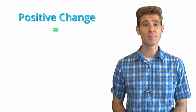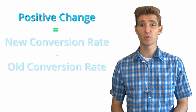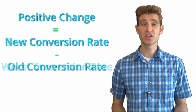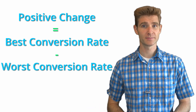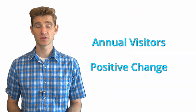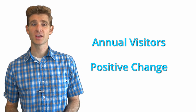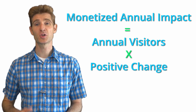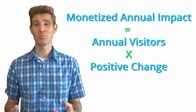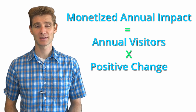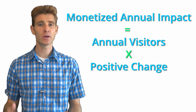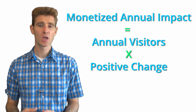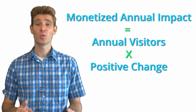The second step is to calculate the positive change: new conversion rate minus old conversion rate, or best conversion rate minus worst conversion rate. Now that you have total annualized visitors and total positive change, you can calculate your annualized impact by simply multiplying total annualized visitors by total positive change. This gives you your monetized annual impact — a comparable data point across different tests that ran for different durations with different visitor counts.